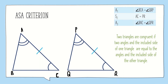Now let's see the third criterion, that is the ASA criterion, which states that two triangles are congruent if two angles and the included side of one triangle are equal to the angles and the included side of the other triangle. As we can see in the figure, angle A is equal to angle P, angle C is equal to angle R, and AC is equal to PR. Here it is important to check whether the included side is equal or not.